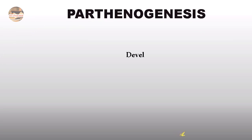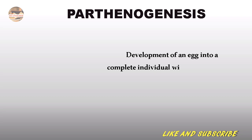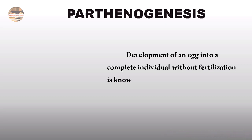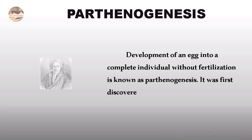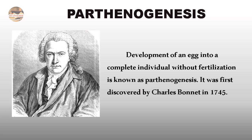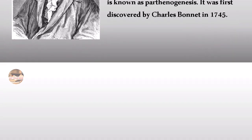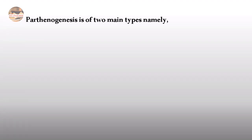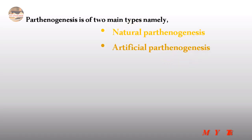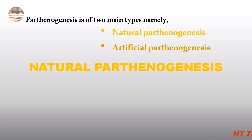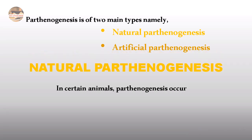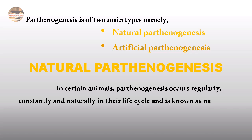Parthenogenesis is the development of an egg into a complete individual without fertilization. It was first discovered by Charles Bonnet in 1745. Parthenogenesis is of two main types: Natural Parthenogenesis and Artificial Parthenogenesis. In certain animals, parthenogenesis occurs regularly, constantly, and naturally in their life cycle, and this is known as Natural Parthenogenesis.